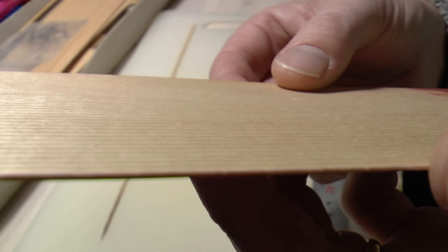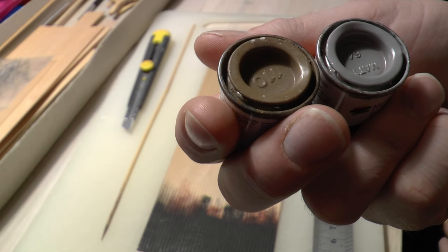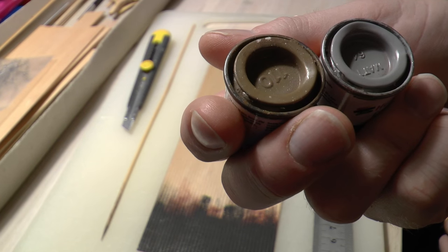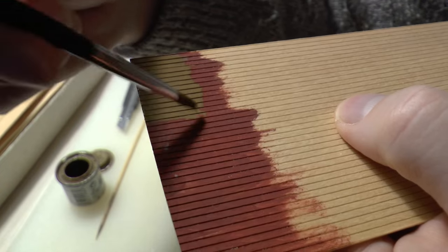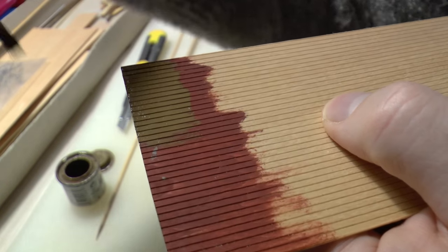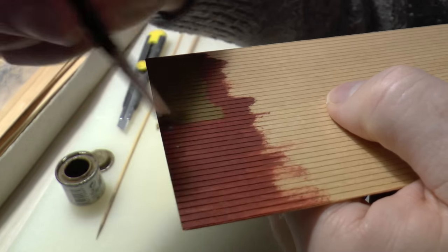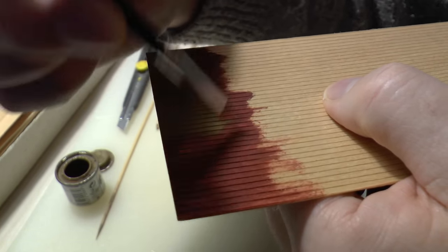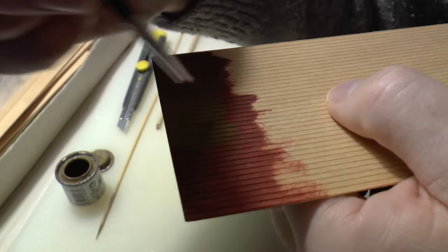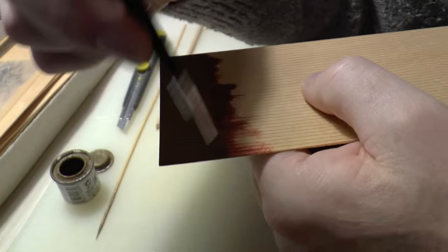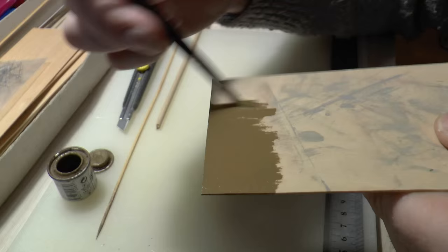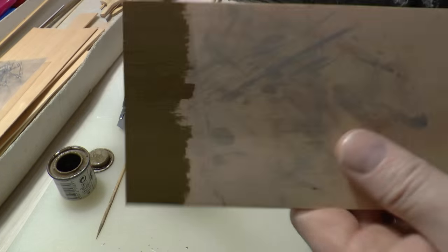To paint this I will use Humbrol colors 110, which is natural wood, and 64, which is just gray. I start by painting the bridge in 110 natural wood. In general, it's always best to start by painting all the things before you start assembly.